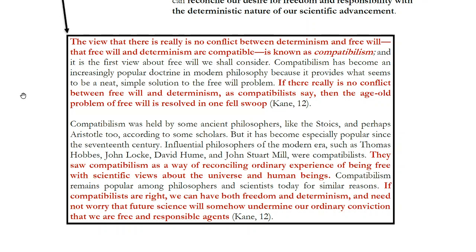The view that there is really no conflict between determinism and free will — that these are compatible — is known as compatibilism. If there really is no conflict between free will and determinism, as compatibilists say, then the age-old problem of free will is resolved in one fell swoop. A number of philosophers have taken this view, including Thomas Hobbes, John Locke, David Hume, and John Stuart Mill.